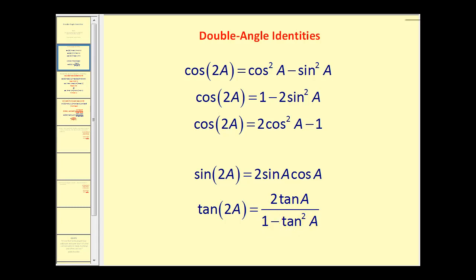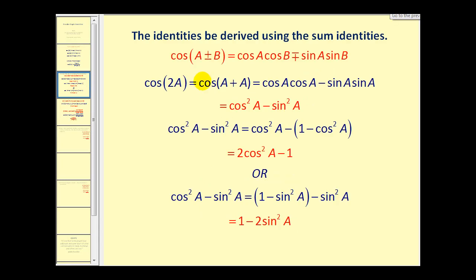Let's take a quick look at how these can be verified. If we take the sum identity for cosine and use cosine of A plus A instead of A plus B, we can see how cosine of two A equals cosine squared A minus sine squared A. Taking this further, we can replace sine squared A with one minus cosine squared A to obtain two cosine squared A minus one, or replace cosine squared A with one minus sine squared A to obtain one minus two sine squared A.